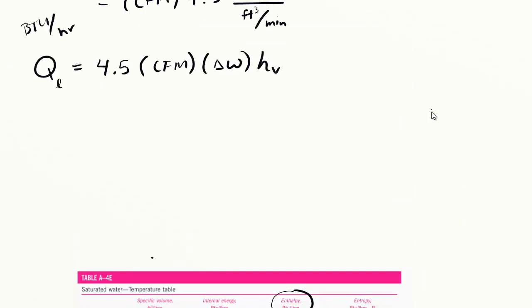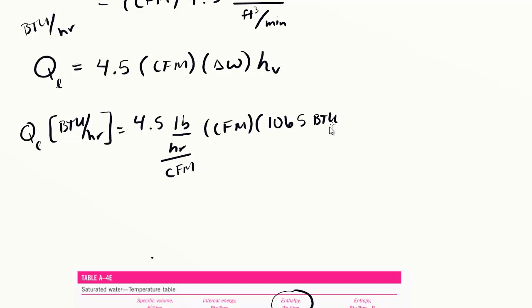Let's put this in. Q latent in BTU per hour equals 4.5 pounds per hour per CFM multiplied by the CFM of air multiplied by 1065 BTU per pound, multiplied by delta omega, or omega 2 minus omega 1, whatever that happens to be in our process.